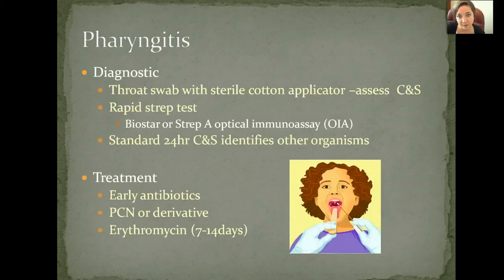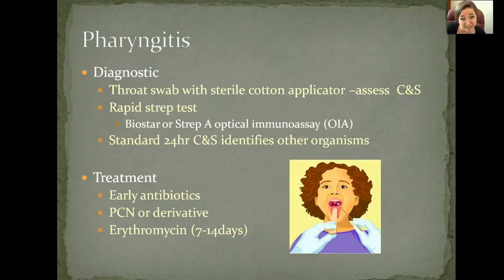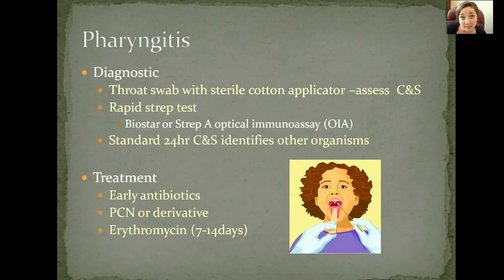To diagnose pharyngitis, you need to get a throat swab. It's very important to remember that the throat swab needs to be a sterile cotton-tipped applicator. If it's not sterile, it won't accurately pick up the bacteria causing the infection — it might instead pick up bacteria from somewhere else, like the container it was sitting in. We need to see specifically what is on the throat.